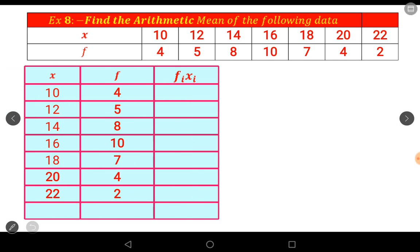The third column is f_i × x_i. Find the f_i × x_i value where f_i × x_i means first class frequency times first class observation. So 10×4 is 40, 12×5 is 60, 14×8 is 112, 16×10 is 160, 18×7 is 126, 20×4 is 80, 22×2 is 44.